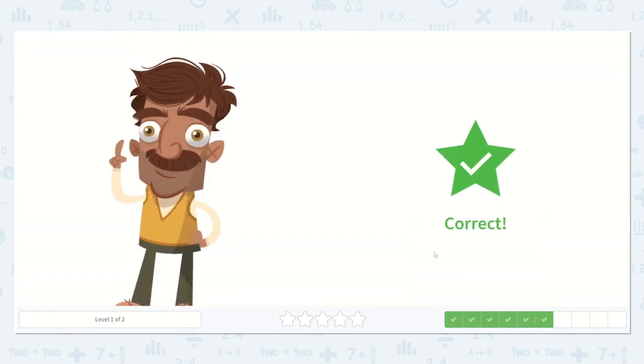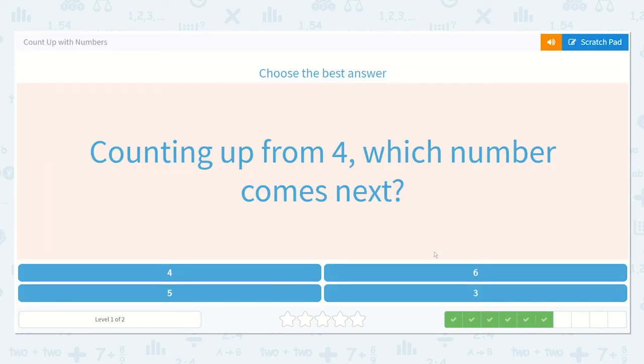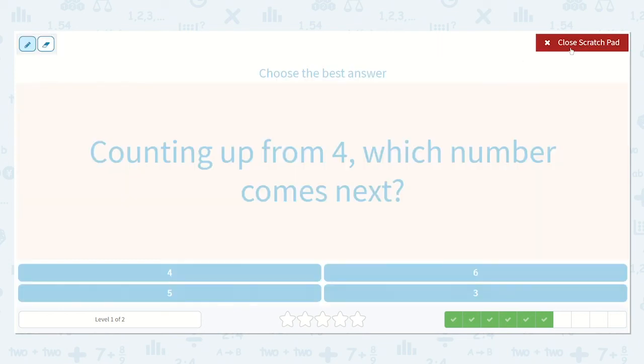Again, we don't always have to start with one, but if we're starting to feel confused, we can start with one. Counting up from four, which number comes next? Let's see. Let's start with a number we know is smaller. I know two is smaller than four.